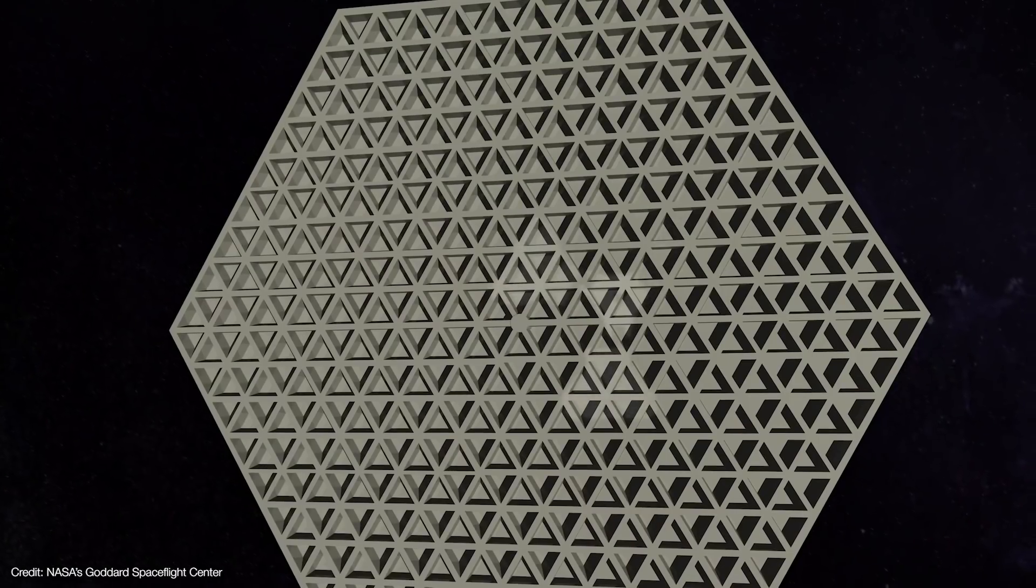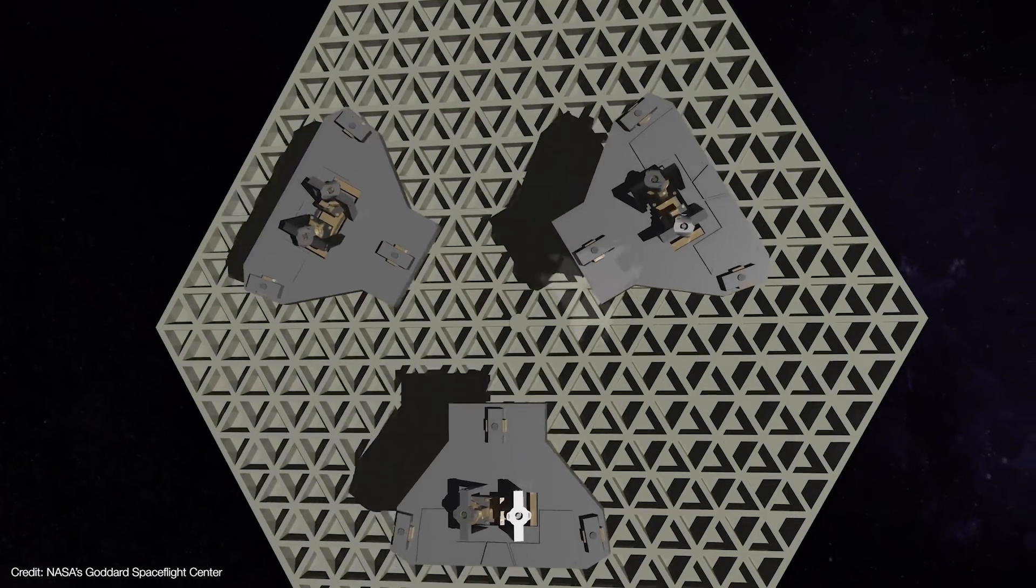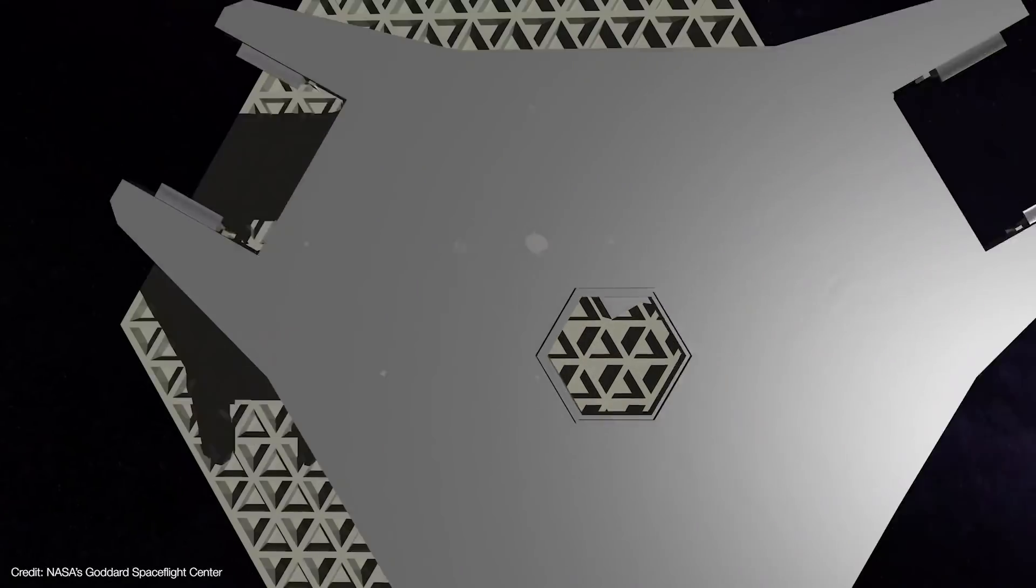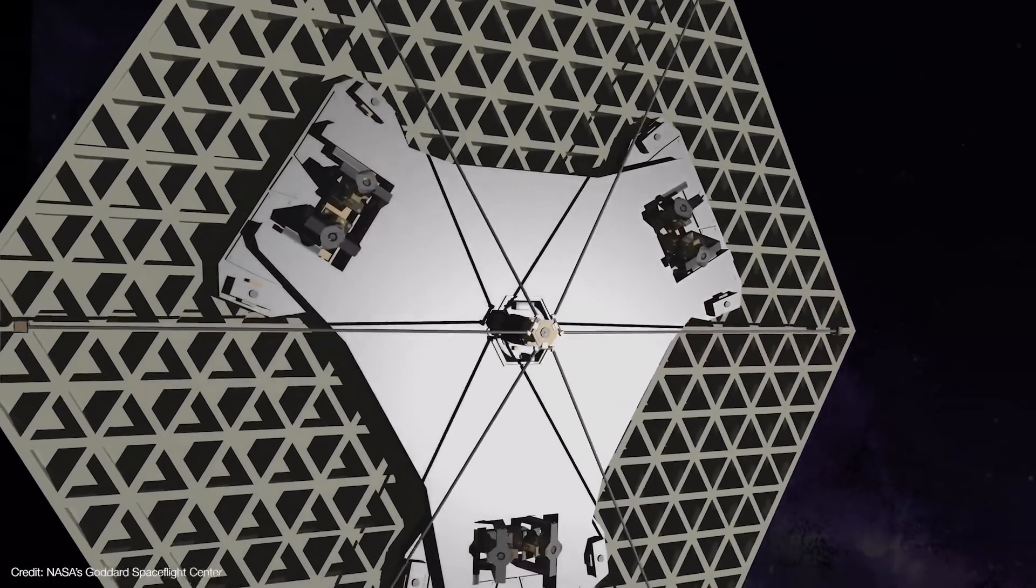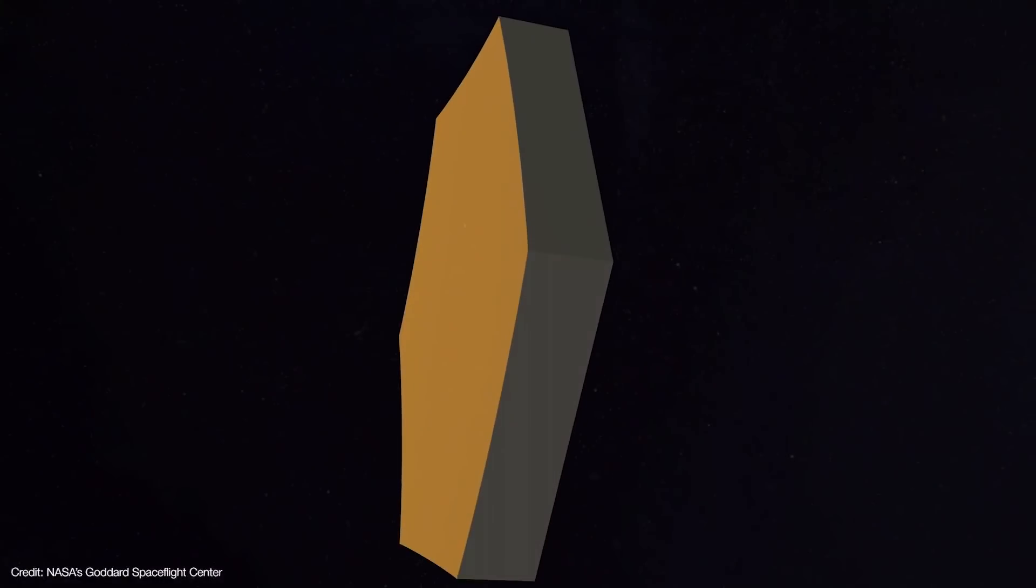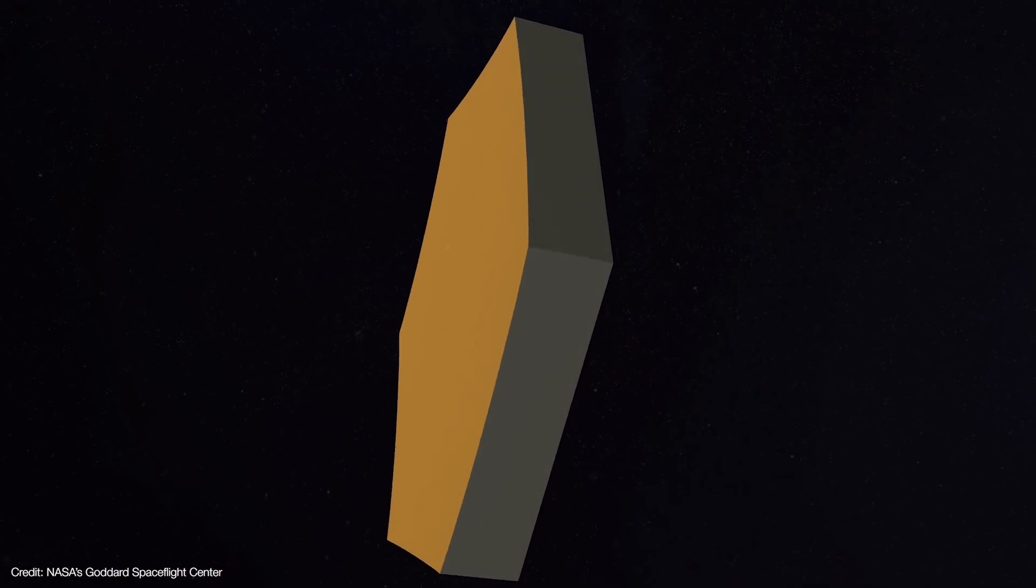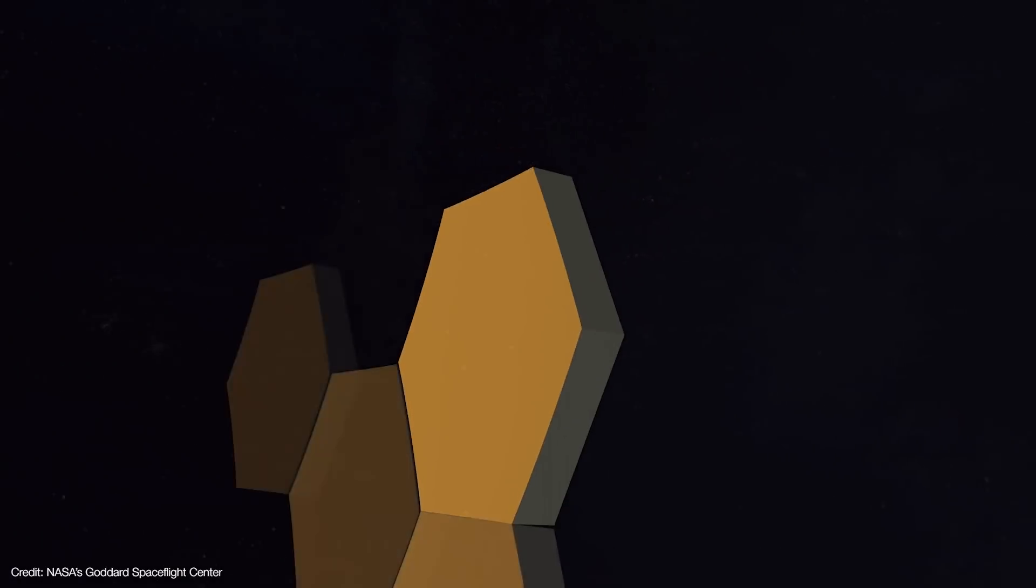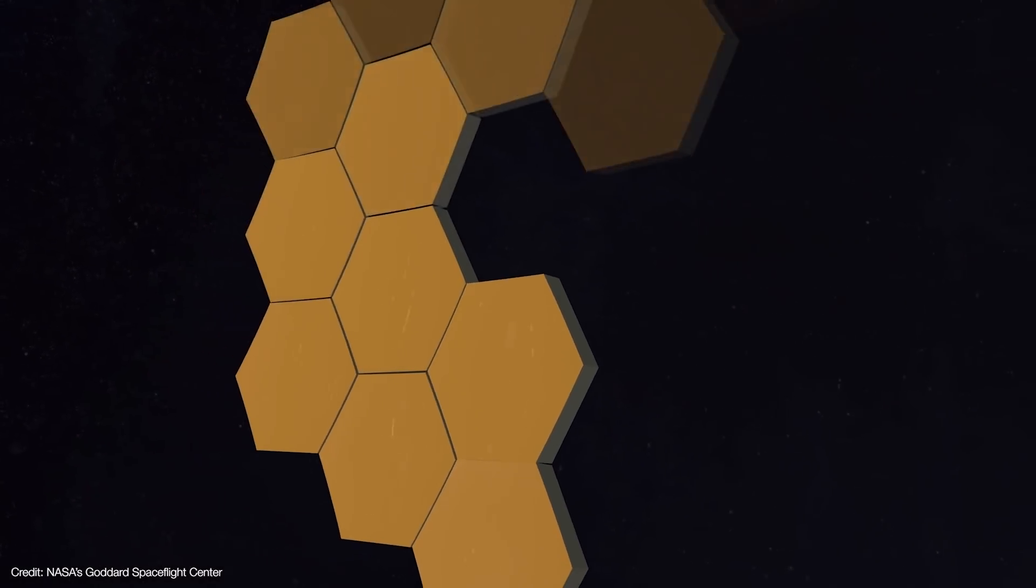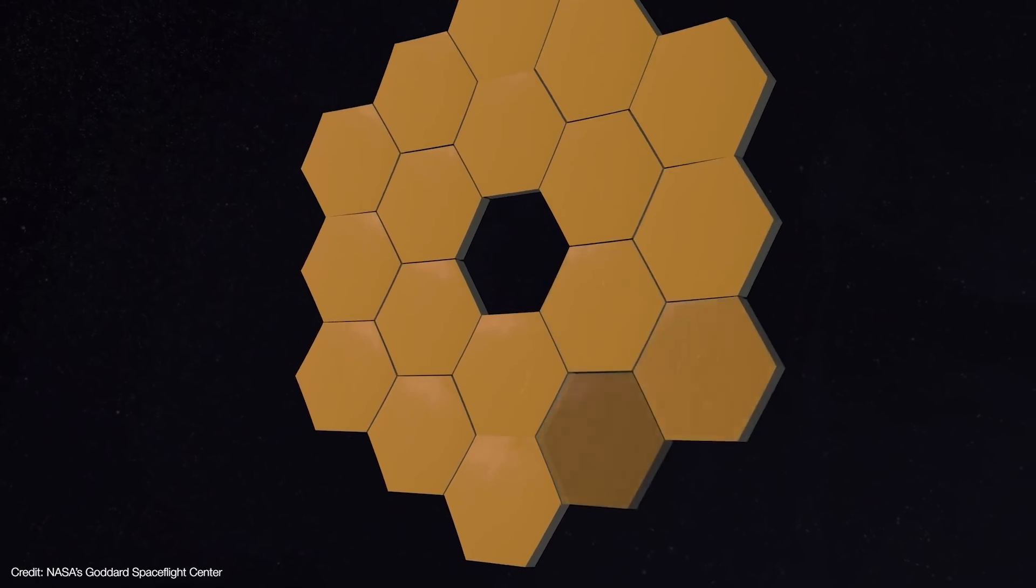Behind each segment, six actuators are arranged in a hexapod configuration. They adjust the segment's orientation in not just focus, but in six spatial degrees of freedom, including its pitch, yaw, and roll. They can even adjust the segment's horizontal and vertical position in space with respect to the others. Each segment is separated by a few millimeters to allow for these adjustments.